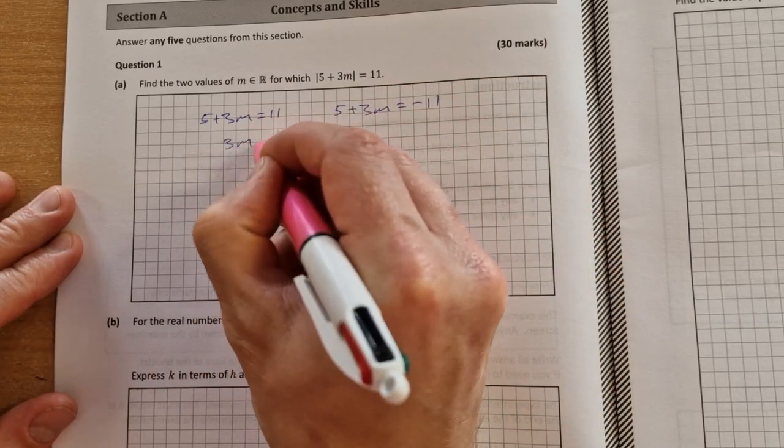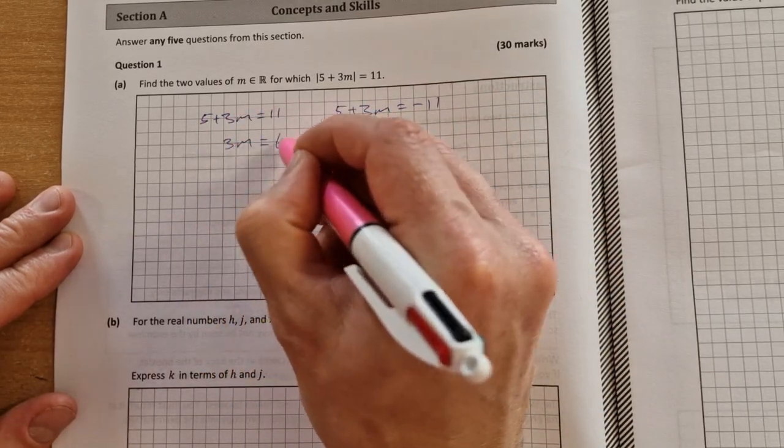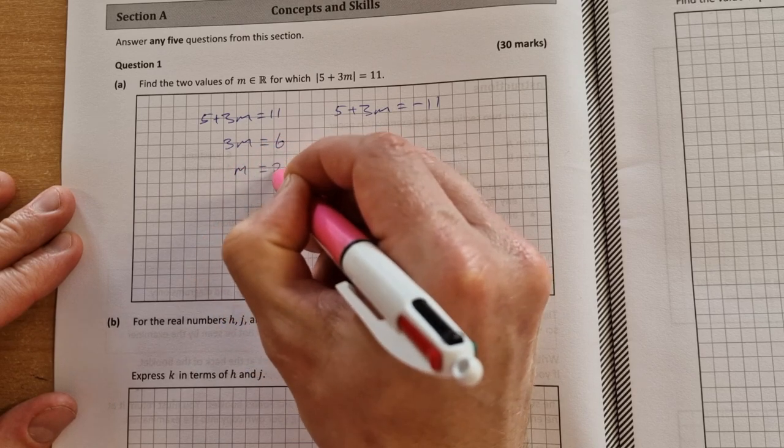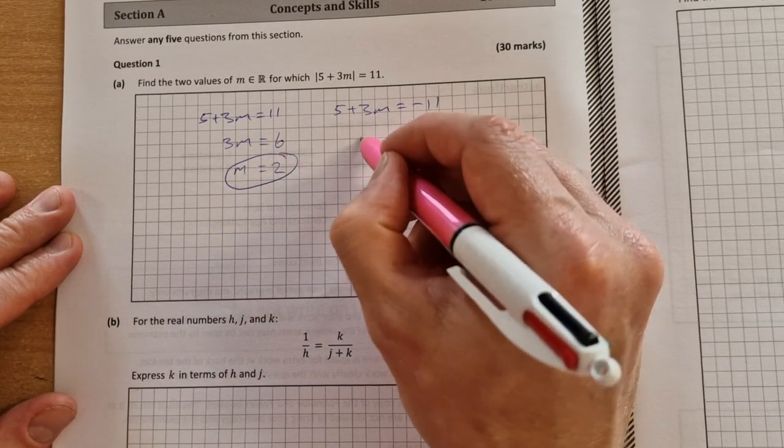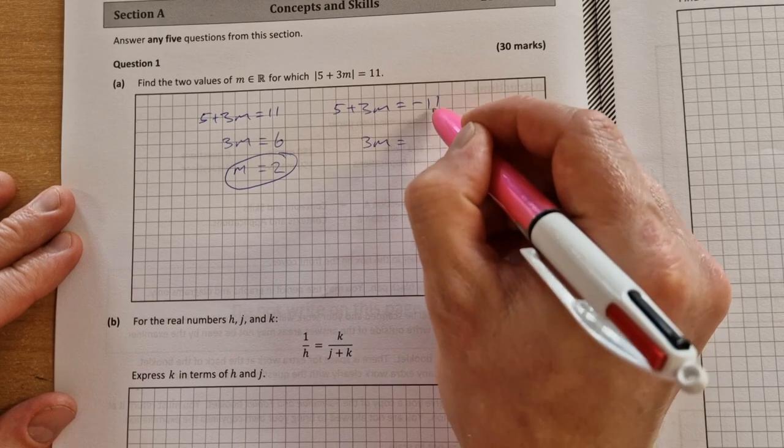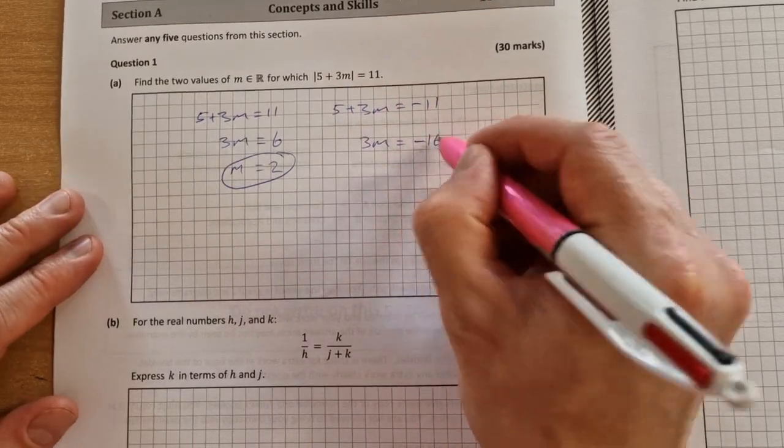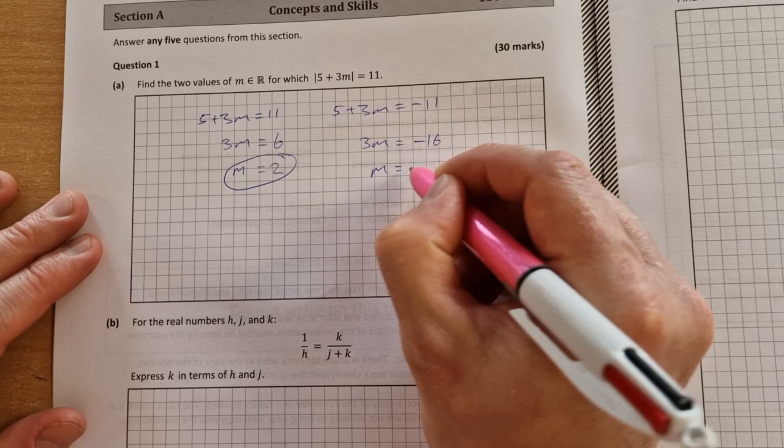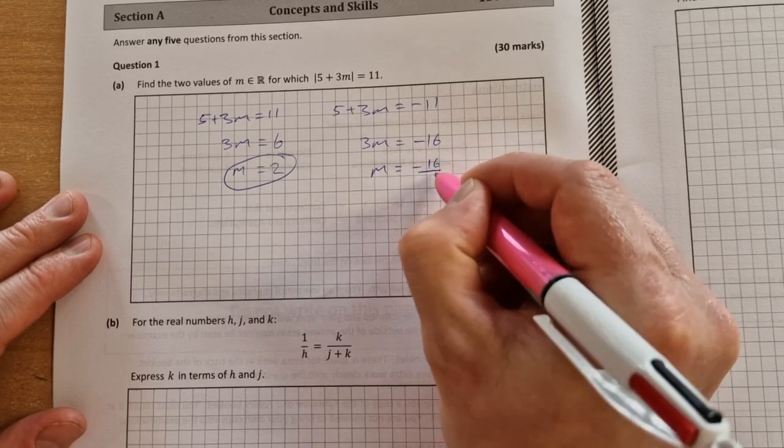So here you get 3m is equal to 11 minus 5 is 6, so m is equal to 2. And here you'll get 3m is equal to minus 11 minus 5 is minus 16, so m is equal to minus 16 over 3.